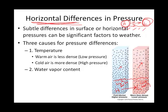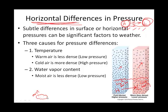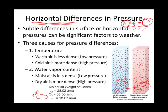Another way we can have chunks of air with different horizontal pressures is if those chunks of air have different moisture contents. This sounds counterintuitive, but if I have a chunk of air that's relatively moist, that means I have a lot of H2O molecules in there. H2O molecules weigh less — a water molecule weighs 18.02 AMUs, or atomic mass units. Compare that to a nitrogen gas molecule, which is 28.02 AMUs. So moist air will tend to have a low pressure.